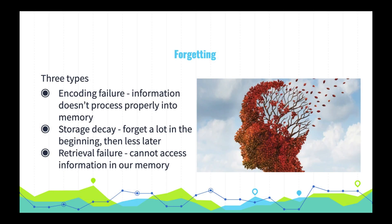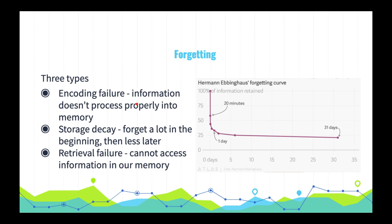Any discussion of memory wouldn't be complete without notes on forgetting. There are three types: encoding failure, storage decay, and retrieval failure. Encoding failure occurs when we don't put enough effort into processing information into our memories. Storage decay describes how after learning something we initially forget a lot quickly, then our retention levels off — you can see this in the curve on the slide.